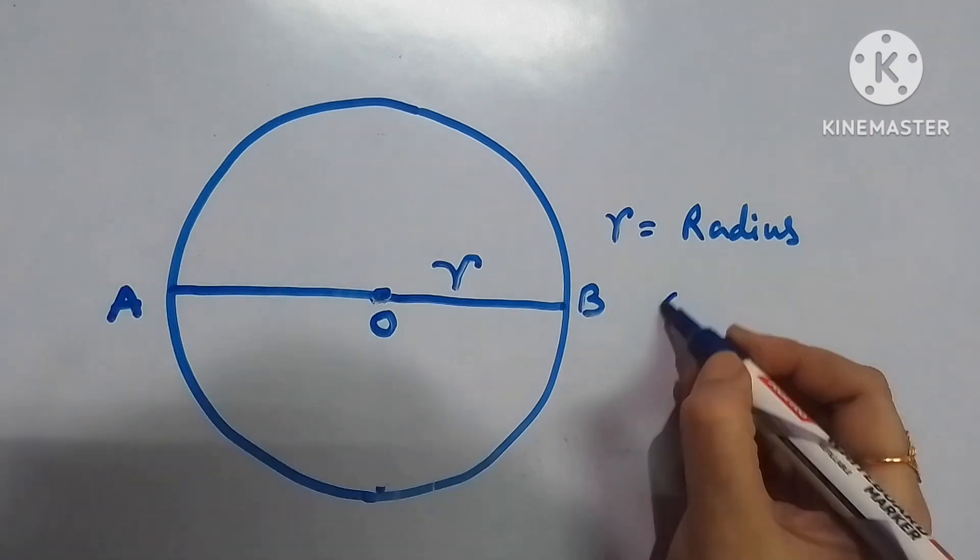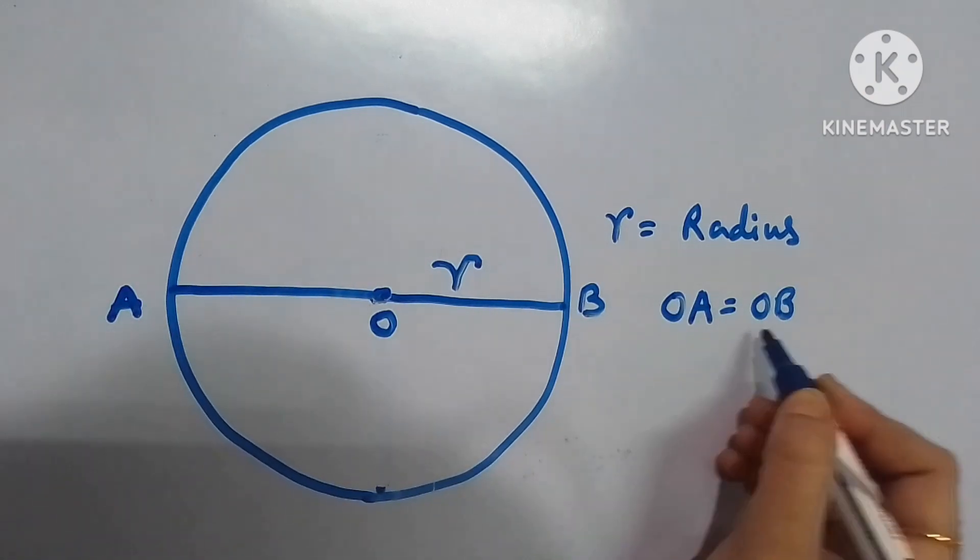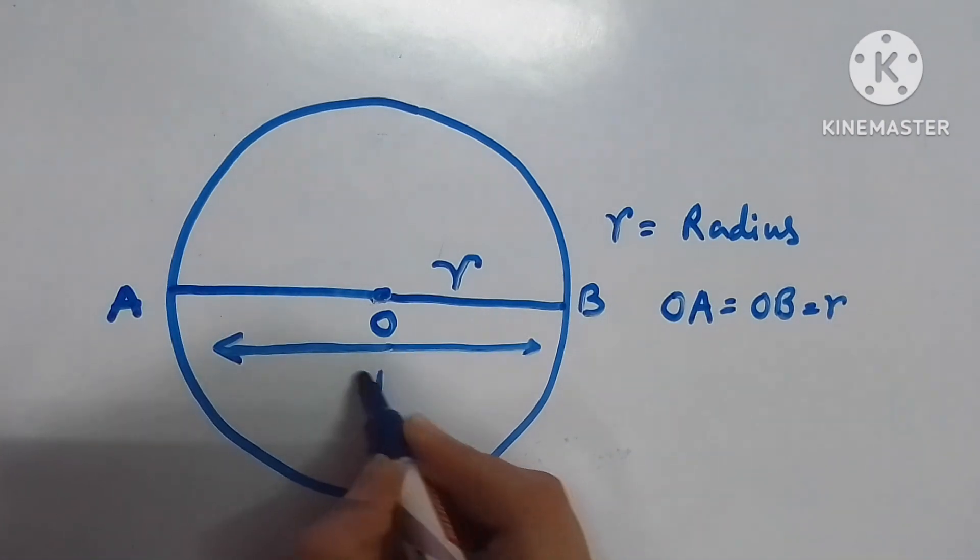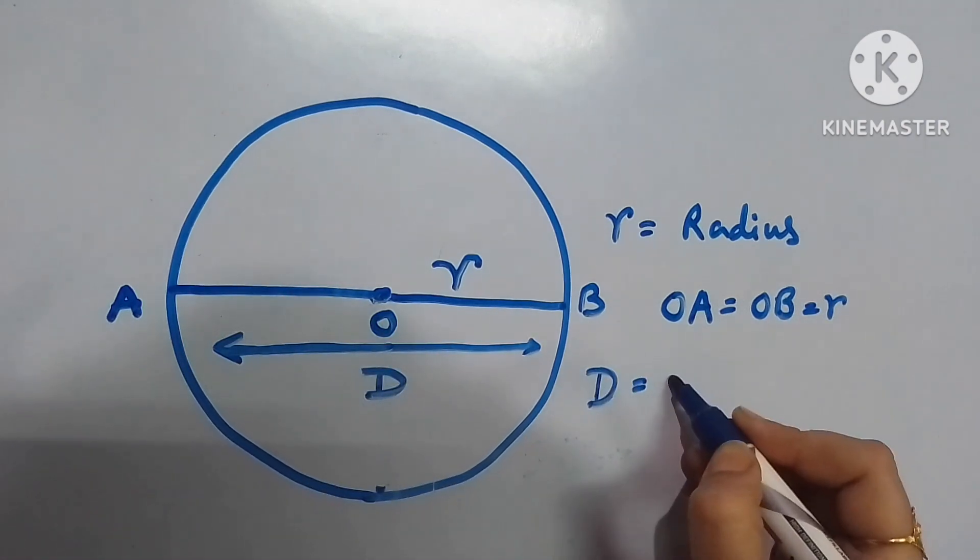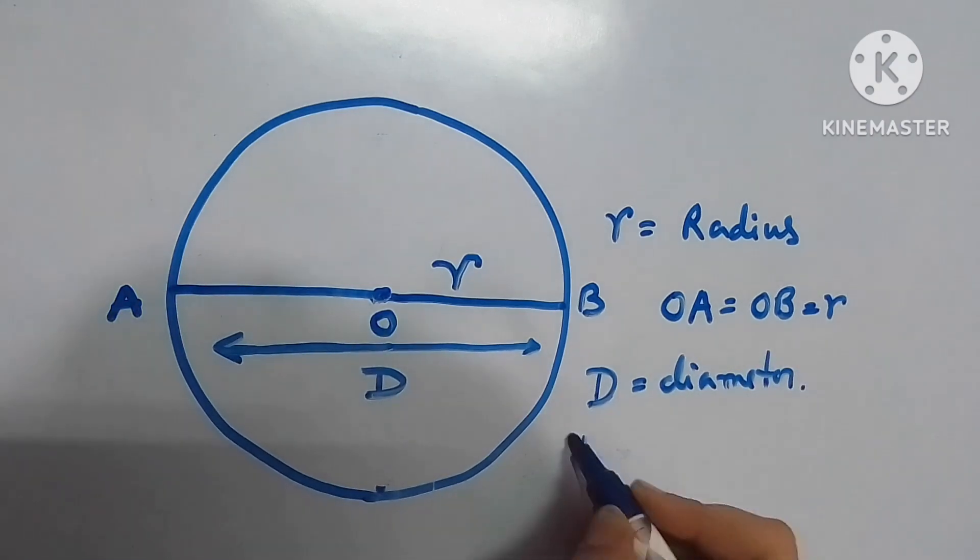Diameter - now if OA and OB are the two radii, then OA will be equal to OB will be equal to r, and the total AB, the length of AB will be diameter or 2 into r.